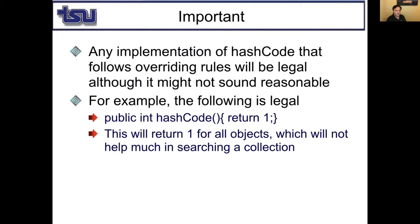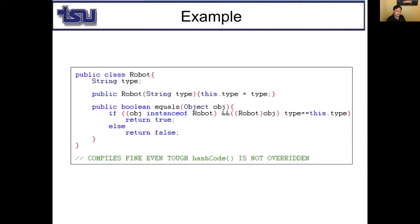Any implementation of hashCode following overriding rules is legal. For example, 'public int hashCode() { return 1; }' is correct overriding, but it puts all objects in the same bucket — not efficient for searching. You don't have to override hashCode, but if you don't, it won't be efficient for ordering or searching in collections.